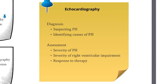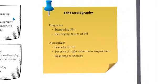Echocardiography is used mainly in the diagnosis of pulmonary hypertension, particularly when one is suspecting pulmonary hypertension and identifying further causes. It can also be used to assess the severity of pulmonary hypertension, the degree of right ventricular impairment, and also the response to therapy.